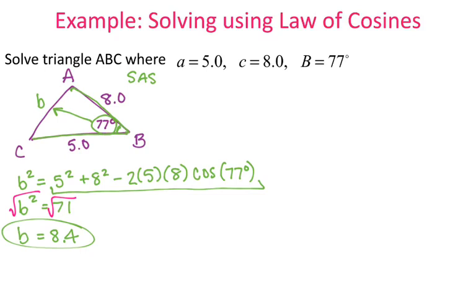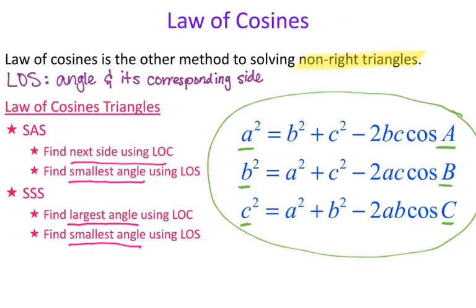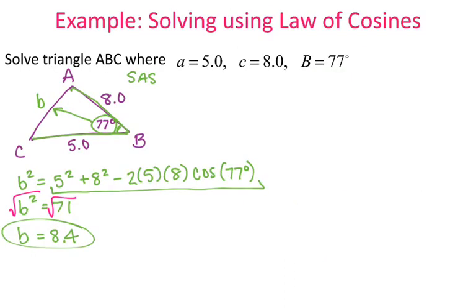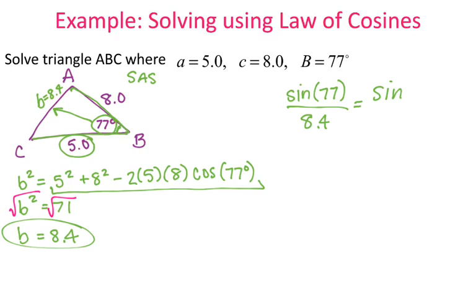Now, following the steps for a side-angle-side triangle, I find the smallest angle using law of sines. The smallest angle is opposite the smallest side. Since side B is 8.4 and side A is 5.0, the smallest side is A, so I need to solve for angle A. I set up the ratio: sin(77°)/8.4 = sin(A)/5.